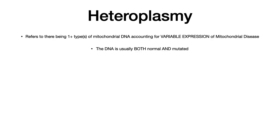Heteroplasmy is the most confusing term on this list. Heteroplasmy refers to there being one or more types of mitochondrial DNA, which accounts for a variable expression of mitochondrial disease. Because there's one or more types of mitochondrial DNA — both normal and mutated — you get variable expression of mitochondrial disease. This term only applies within the realm of mitochondrial DNA diseases.